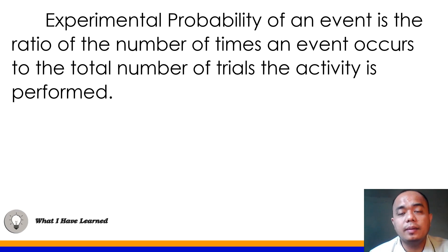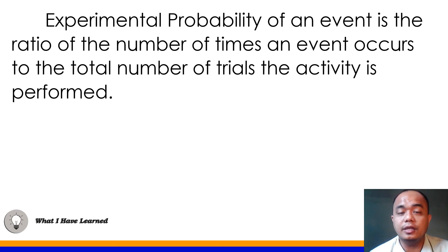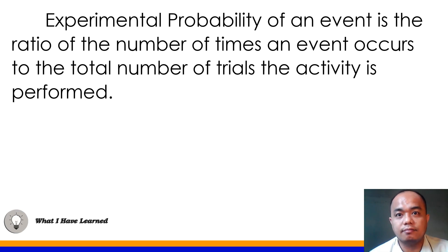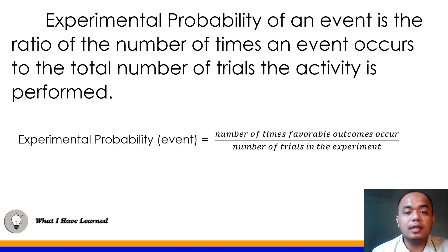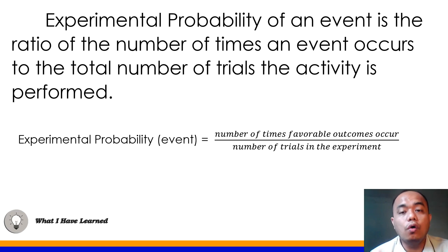The experimental probability of an event is the ratio of the number of times an event occurs to the total number of trials the activity is performed. Here, there is an actual result of an event. The formula: experimental probability of an event equals the number of times favorable outcomes occur over the total number of trials in the experiment.